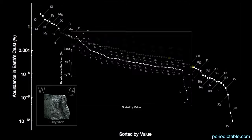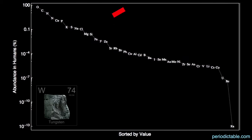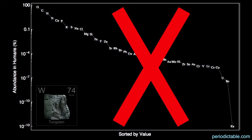Tungsten is the 50th most abundant element in the ocean, a very difficult-to-detect 12 parts per 100 billion. And lastly, like most of the elements in the upper reaches of the periodic table, there is no tungsten in us.